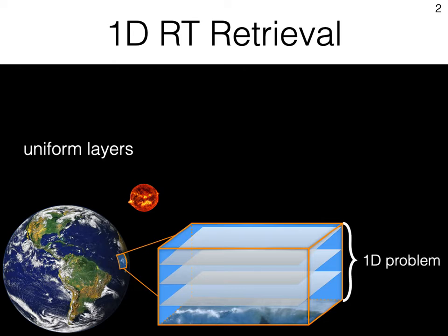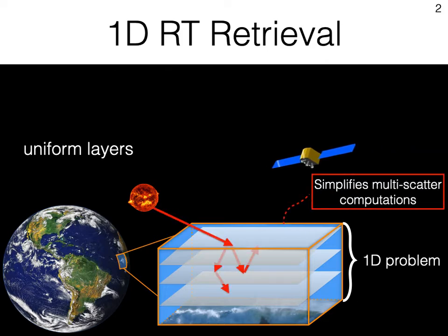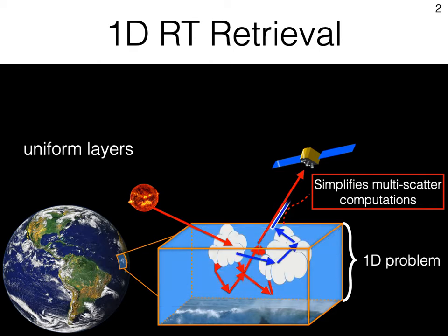This model simplifies multiple scattering computations. However, if you've looked up to the sky, you'd see that this is inaccurate, since the atmosphere is actually three-dimensional. Now, in our work, we recover cloud properties as a 3D volumetric distribution.